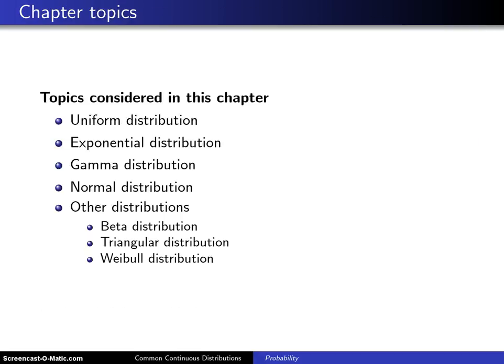There are four main distributions that are considered in this chapter: the uniform, exponential, gamma, and normal distributions.